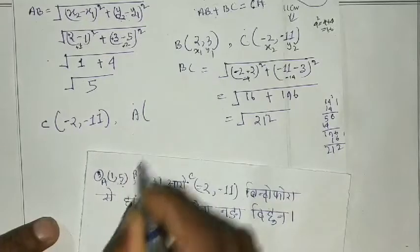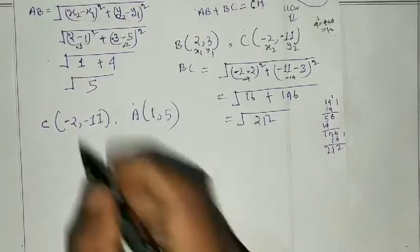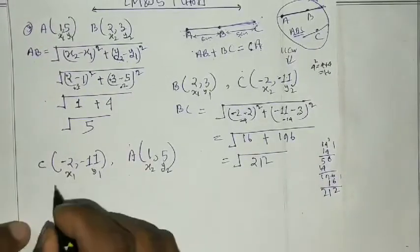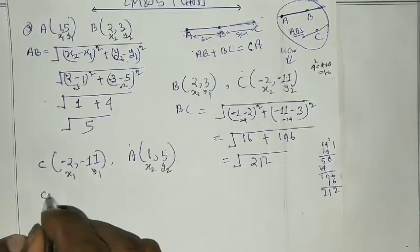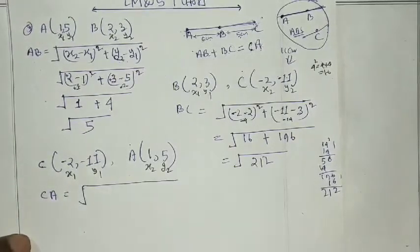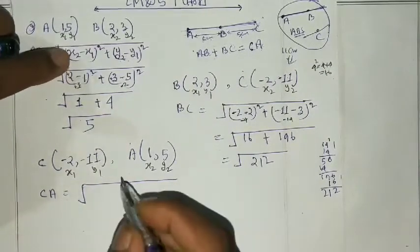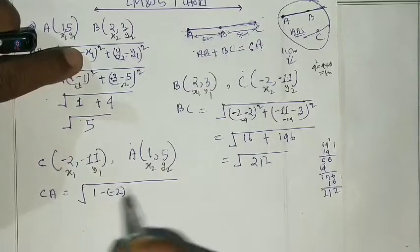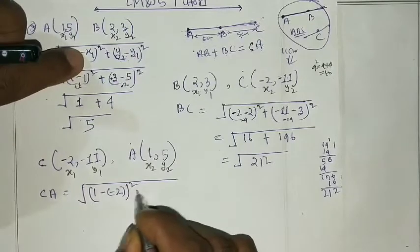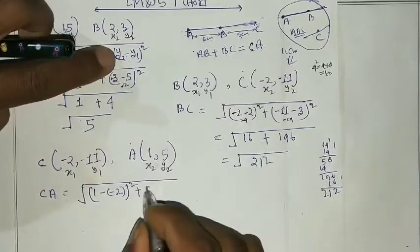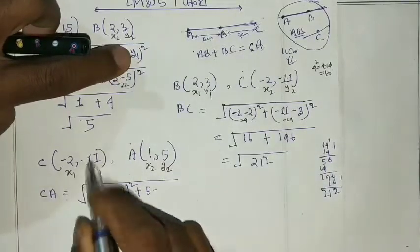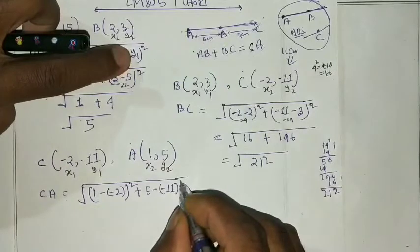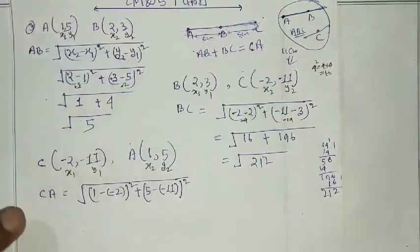One comma five, comma five — x1, y1, x2, y2. The formula: x2 minus x1, whole square, plus y2 minus y1 — that is 5 minus minus 11 — whole square, inside the bracket, squared, plus bracket, squared.